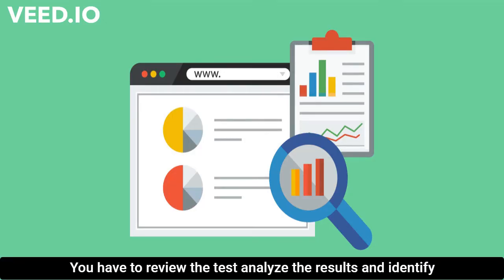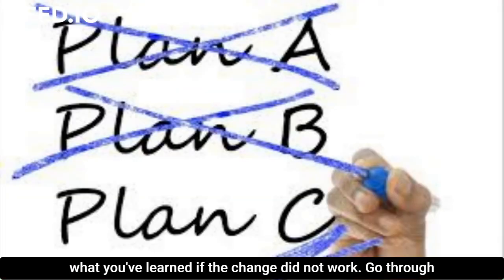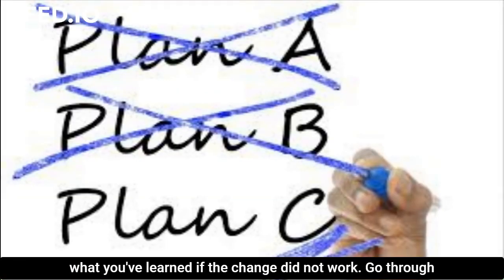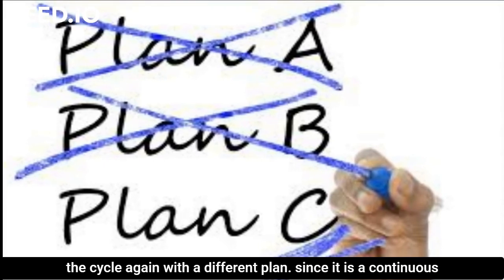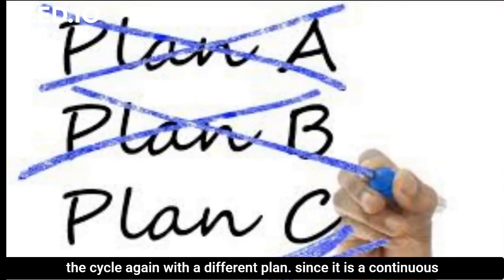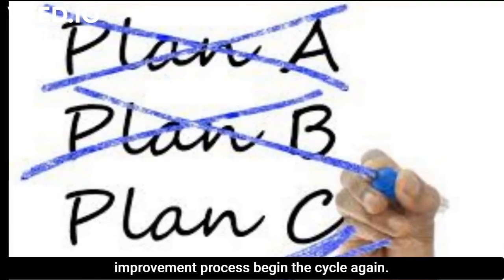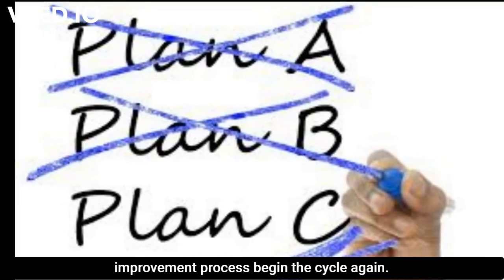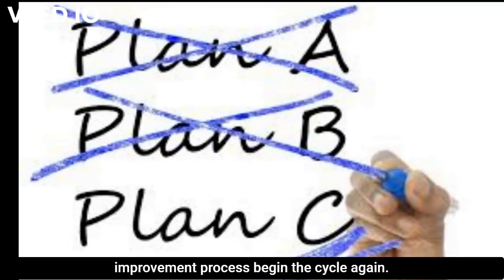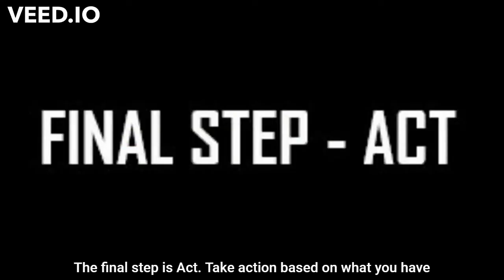The third step is Check — you have to review the test, analyze the results, and identify what you have learned. If the change did not work, go through the cycle again with a different plan, since it is a continuous improvement process.